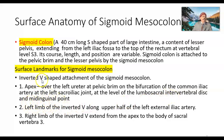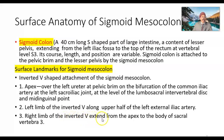It is an inverted V shape. The left limb of the inverted V runs along the upper half of the left external iliac artery. The right limb of the inverted V extends from the apex to the body of sacral vertebra 3.